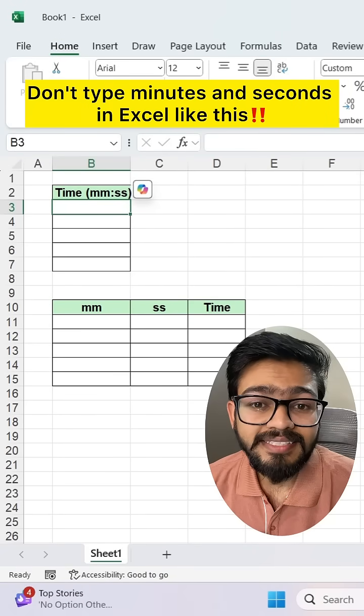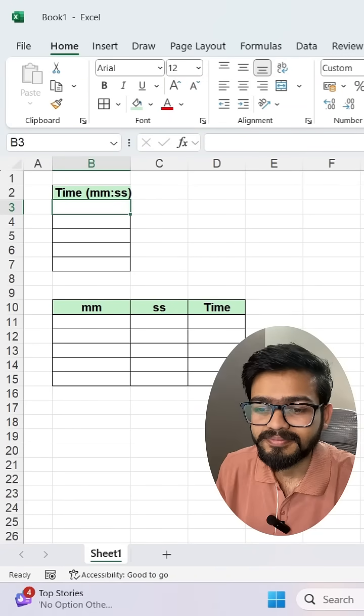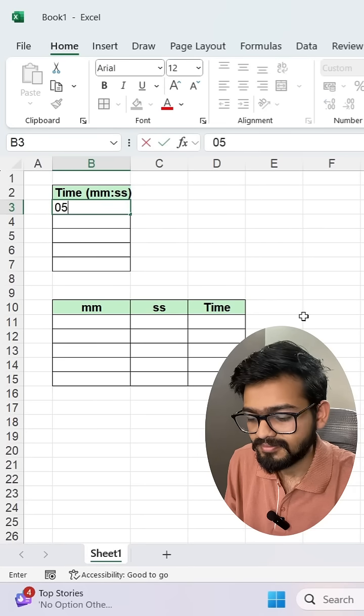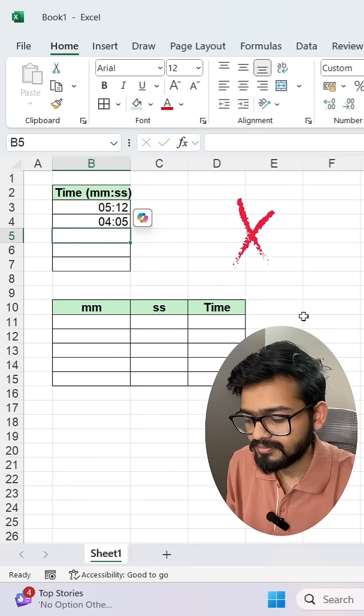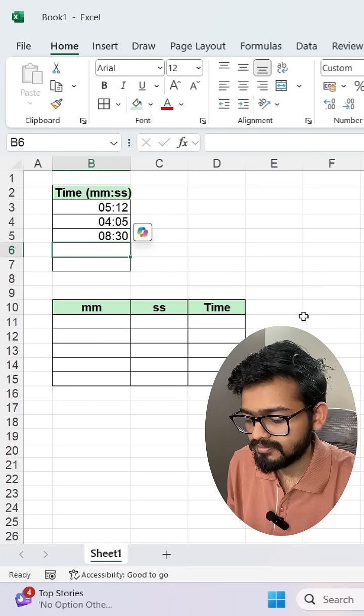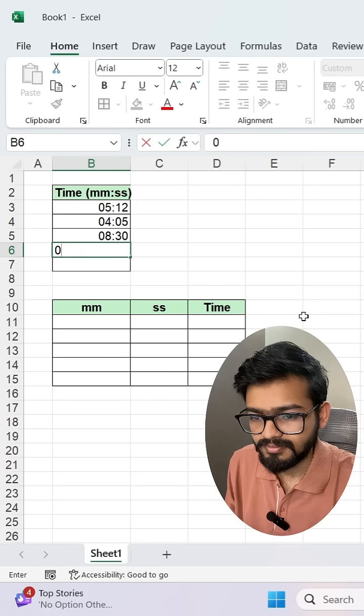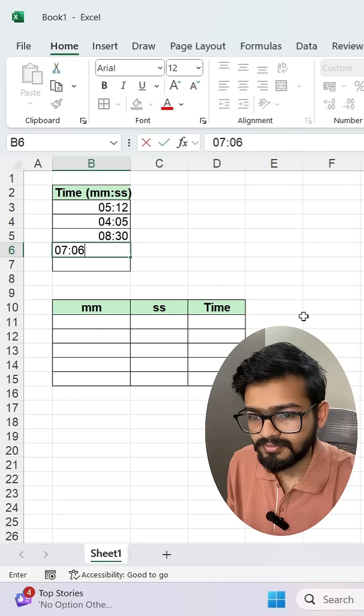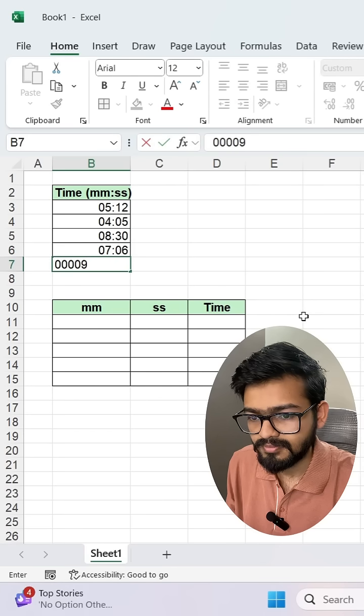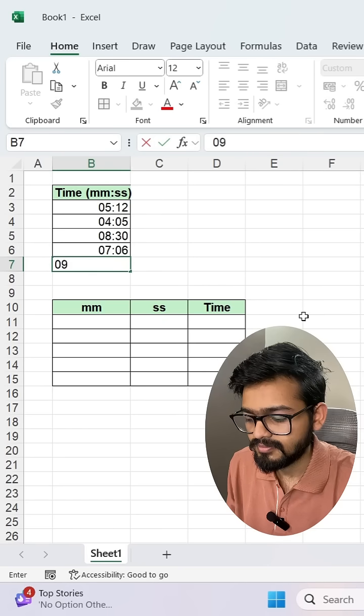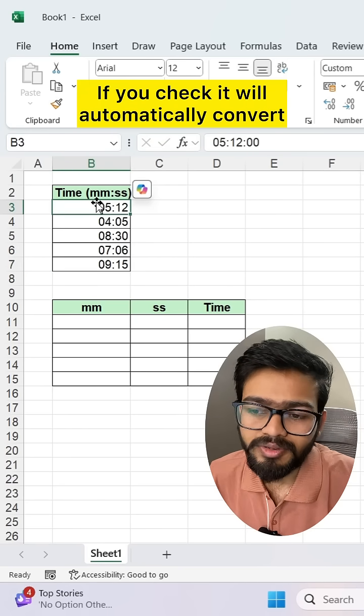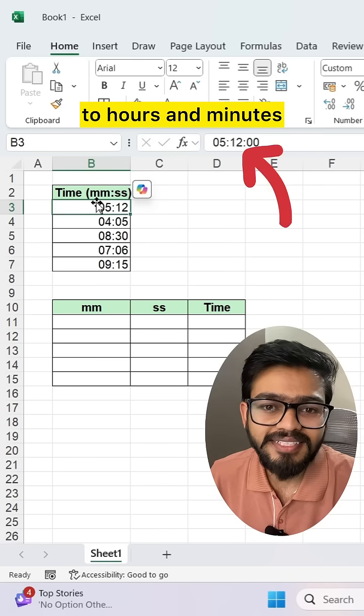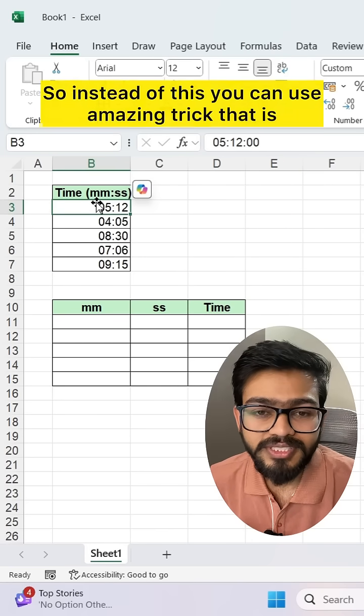Don't type minutes and seconds in Excel like this. If you check, it will automatically convert to hours and minutes.